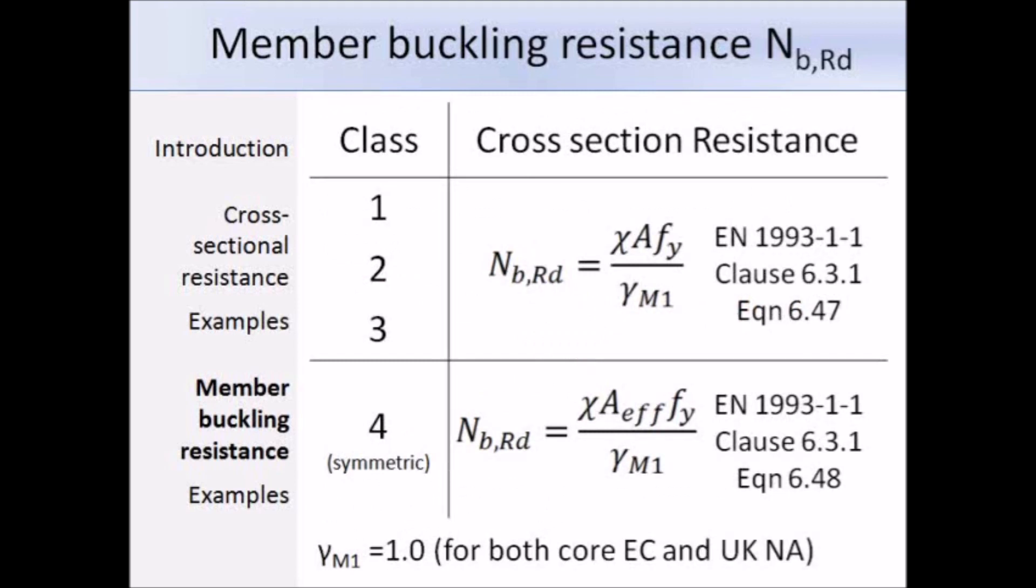Here are the expressions you need to work out the design buckling resistance. There are two separate equations: for sections which are class 1, 2, or 3, we use equation 6.47, and for class 4 sections we use equation 6.48. Both equations are the same except that the area used for class 4 sections is the effective area.